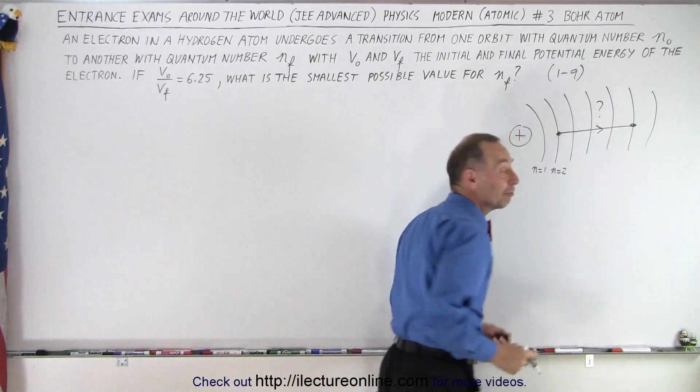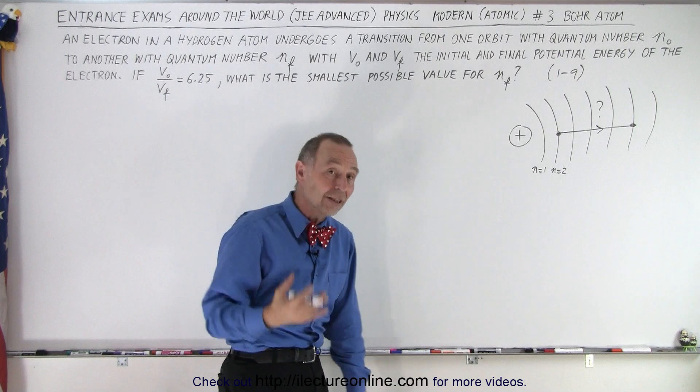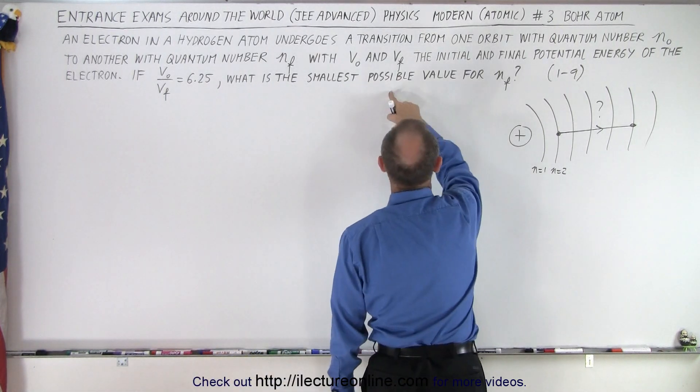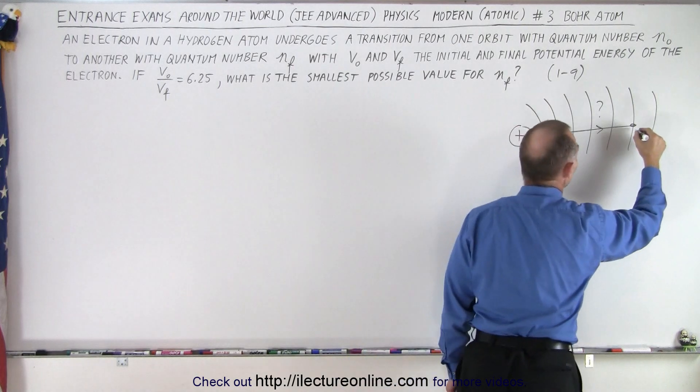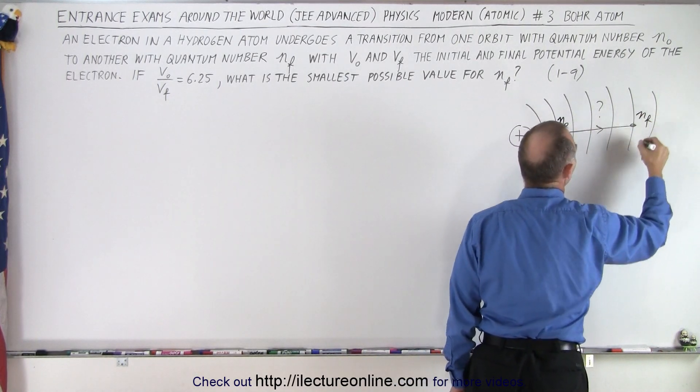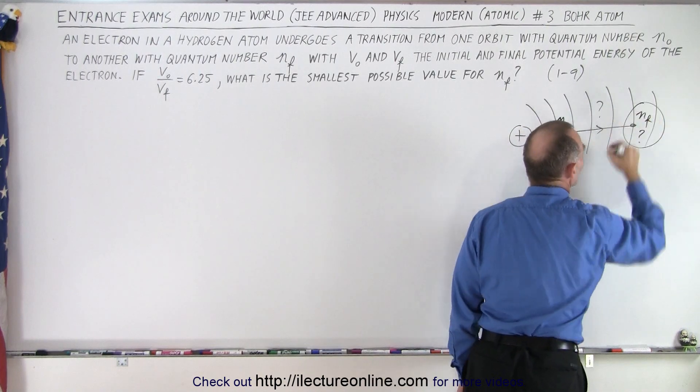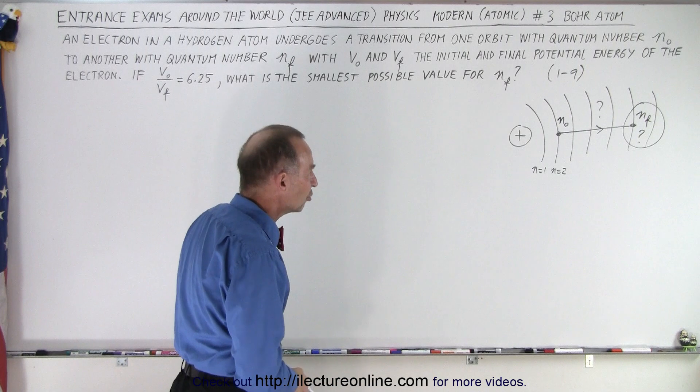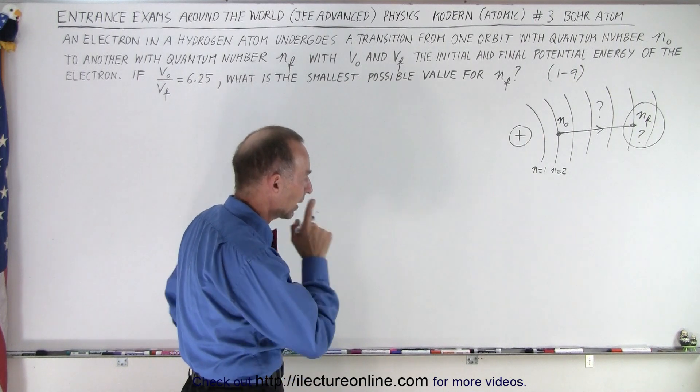We of course don't know where it started from and where it ends up, but what they're asking for is what is the smallest possible value for the final. So this would be n_initial, this would be n_final, and so the question is, what is the smallest possible value of that particular energy level in the hydrogen atom?